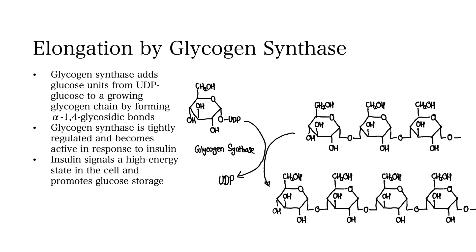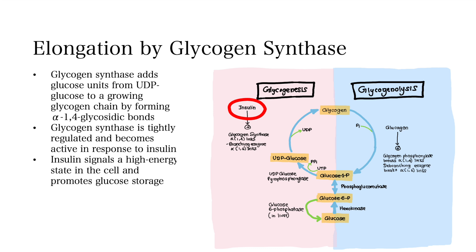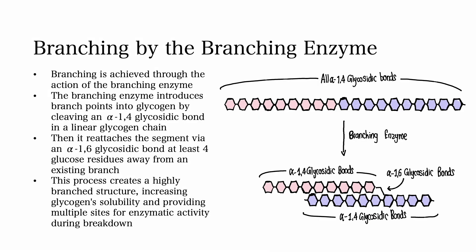Step 3: Elongation by glycogen synthase. Glycogen synthase adds glucose units from UDP-glucose to a growing glycogen chain by forming alpha-1,4 glycosidic bonds. Glycogen synthase is tightly regulated and becomes active in response to insulin. Insulin signals a high energy state in the cell and promotes glucose storage.